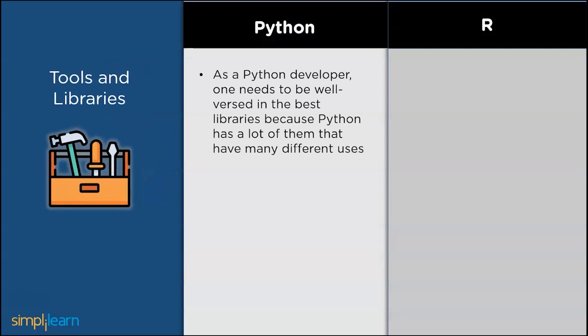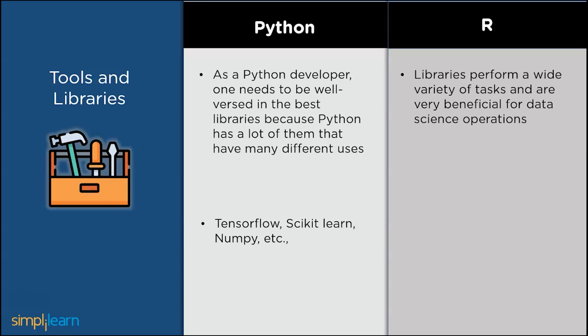The crucial part of parameters, that is tools and libraries in Python and R. As a Python developer, one needs to be well versed in the best libraries because Python has a lot of libraries that have many different uses. Libraries like TensorFlow, scikit-learn, and numpy play an important role in solving many Python-related problems. Libraries perform a wide variety of tasks in R that are very beneficial for data science operations. Examples are dplyr, bioconductor, etc.